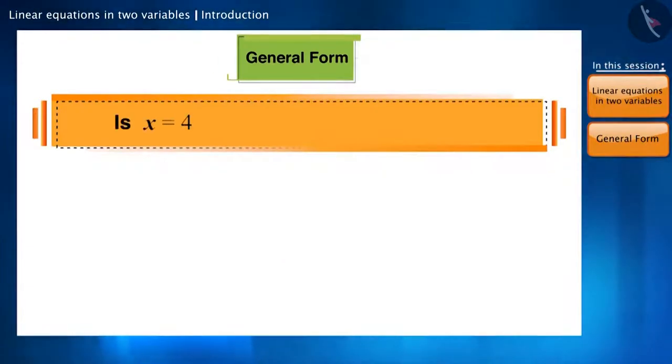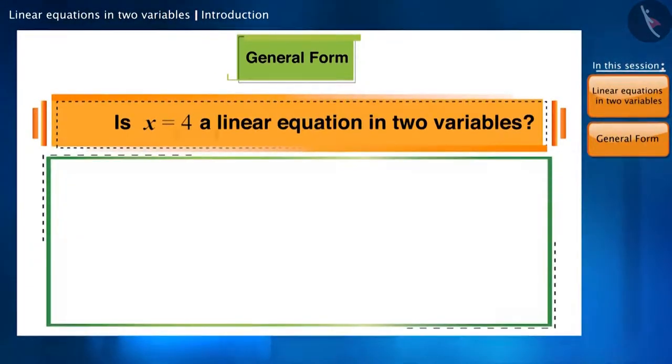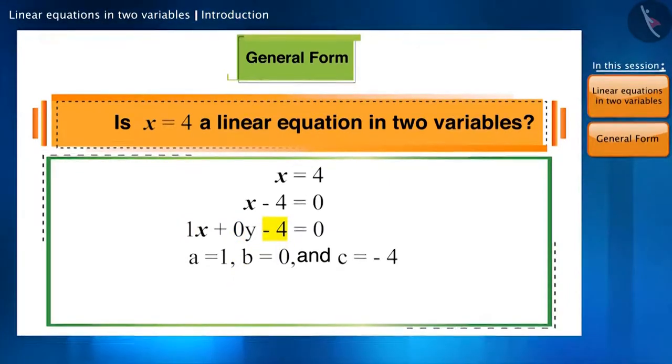Is the equation X is equal to four a linear equation in two variables? We can write it as X minus four is equal to zero, or X plus zero Y minus four is equal to zero as well. Now it is in the form of a linear equation in two variables. Here a is equal to one, b is equal to zero, and c is equal to minus four.